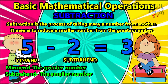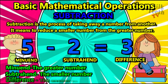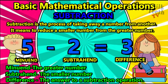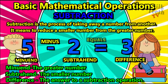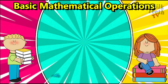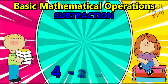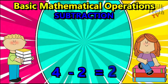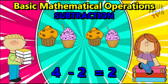In subtraction we get the difference, which is the answer to a subtraction operation. We use the symbol minus, or dash, for subtraction and the symbol equals to show the answer. For example, four minus two equals two.